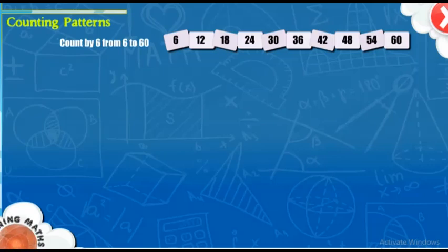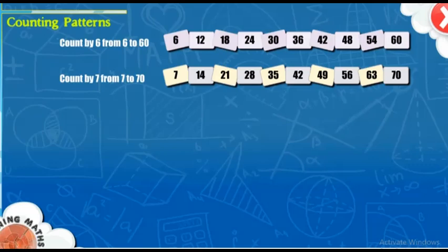60. Count by 7 from 7 to 70. 7, 14, 21, 28, 35, 42, 49, 56, 63.